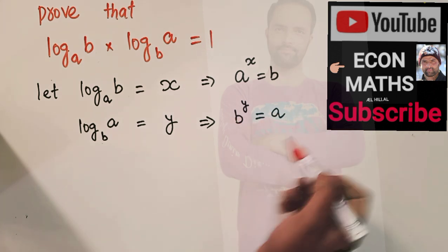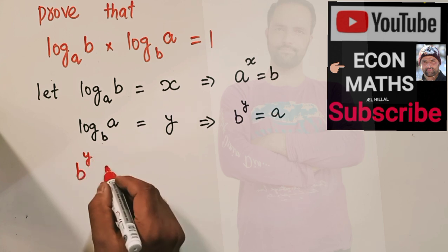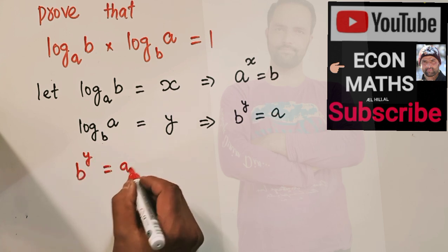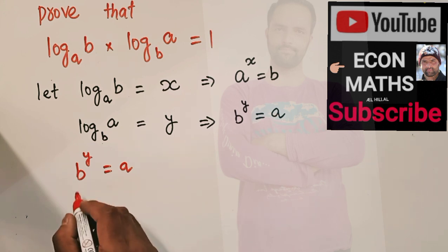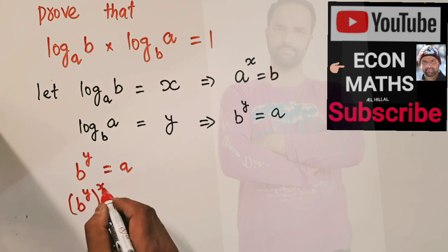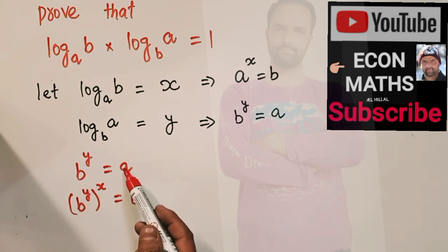So, we have B raise power Y is equal to A. If I write B raise power Y raise power X, it will become B. Why? Because B raise power Y is equal to A.